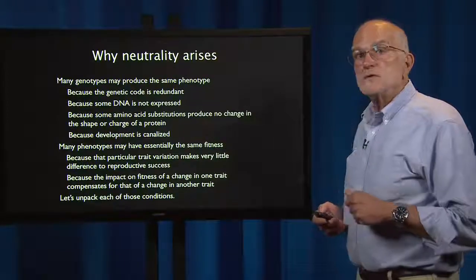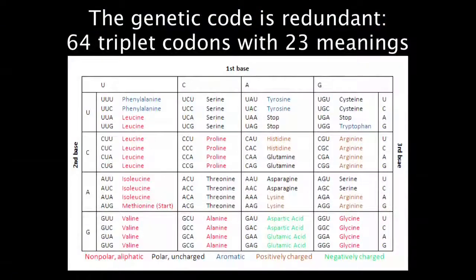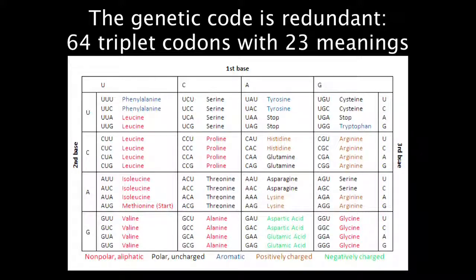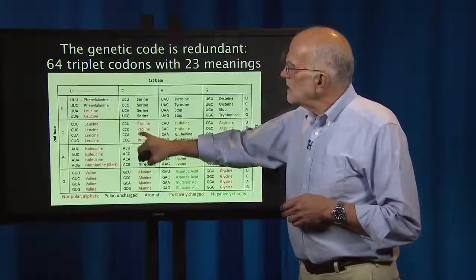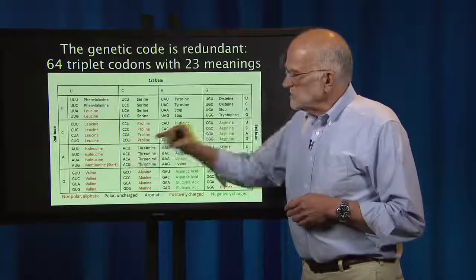Let's unpack those conditions. First, the genetic code is redundant. It produces 23 different meanings — either a start or stop codon, or coding for a particular amino acid — and it uses 64 triplet codons to do so. For example, proline is coded for by four different codons. That variation is usually at the third position: all DNA sequences coding for proline start with CC, and it is the third position in the codon that can be different.